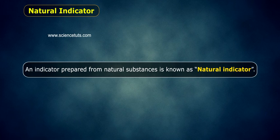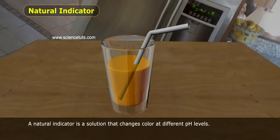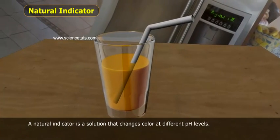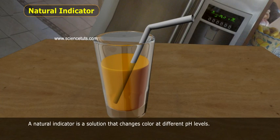Natural Indicator: An Indicator prepared from natural substances is known as a Natural Indicator. A Natural Indicator is a solution that changes color at different pH levels.